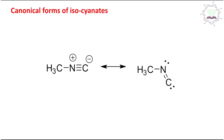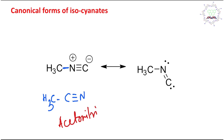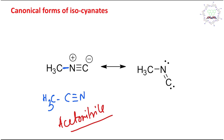In this molecule, nitrogen is attached to the carbon center. Compare this with acetonitrile — CH₃C≡N — which many of you have seen as a reagent or solvent. In acetonitrile, the carbon is directly attached to nitrogen, but in this isocyanate, the arrangement is different.